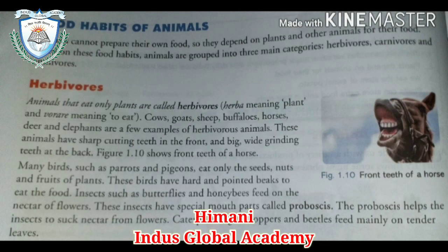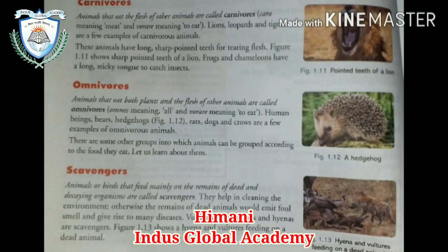Caterpillars, grasshoppers, and beetles mainly feed on tender leaves. After that, we will discuss carnivores. Carnivores are animals that eat the flesh of other animals. Examples: lion, leopard, and tiger. These animals have long, sharp pointed teeth for tearing flesh. In the figure, you can see the pointed teeth of a lion. Frogs have a long sticky tongue to catch insects.